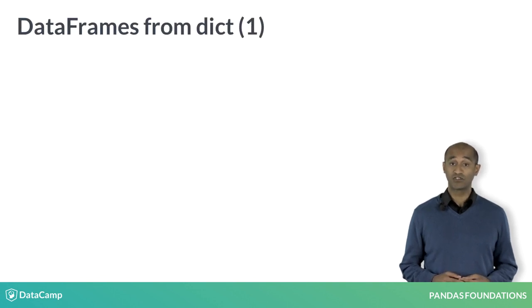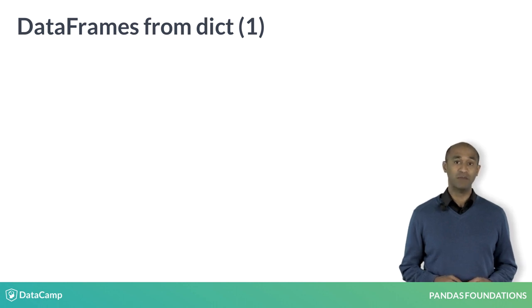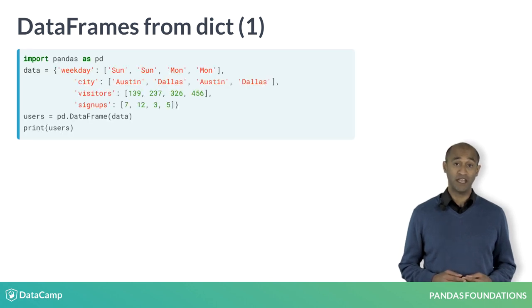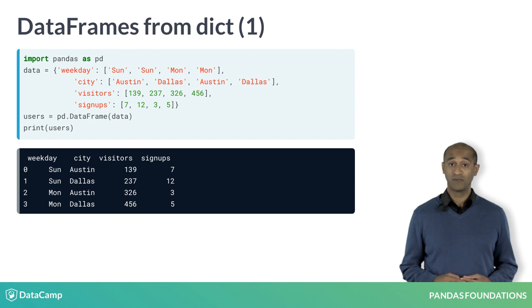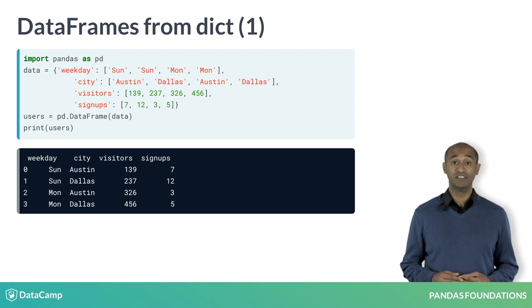Data frames can also be rolled by hand using dictionaries. Remember, dictionaries or associative arrays are a core data structure in Python. Here, we construct a dictionary of lists with the same user's data. The keys of the dictionary data are used as column labels. Notice, with no index specified, the row labels of the data frame are integers 0 to 3 by default.